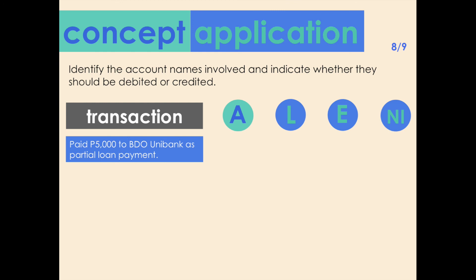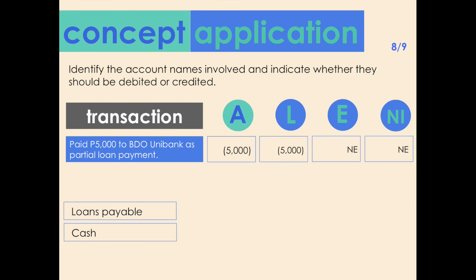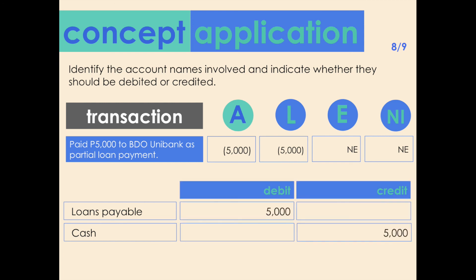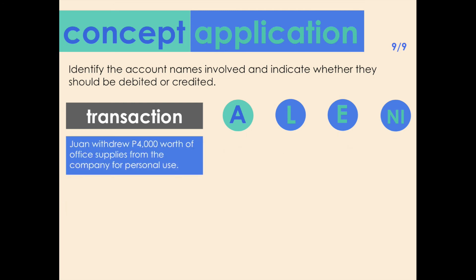Transaction eight: paid 5,000 pesos to BDO Unibank as partial loan payment. Accounts affected: loans payable and cash. The cash payment causes a decrease of 5,000 in assets and also a decrease in outstanding payables — liabilities — by the same amount. The decrease in loans payable should be debited while the decrease in cash should be credited.